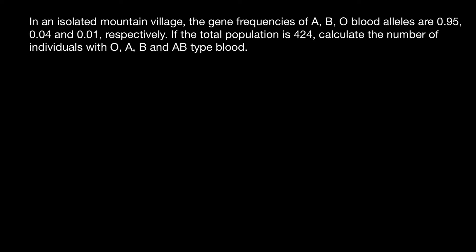Hello and welcome to Nikolai's genetics lessons. Today's problem is: in an isolated mountain village, the gene frequencies of A, B, and O blood alleles are 0.95, 0.04, and 0.01 respectively.